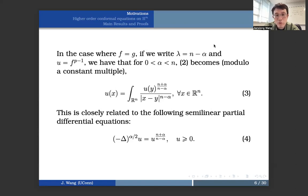we have the previous integral equation to be a similar one up to a constant multiplier, which says equation 3: u of x equals integral u of y to the power n plus alpha over n minus alpha divided by x minus y to the power n minus alpha. And this is closely related to the following semi-linear partial differential equations, which with this fractional order Laplacian, minus delta to the power alpha over 2, u equals u to the power n plus alpha over n minus alpha.